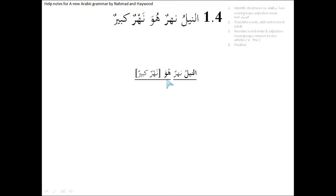هُوَ is a pronoun, and all pronouns are definite. So we have a shift from the definite to the indefinite نَهْرٌ. We know it's indefinite because it has a double تَنْوِين. So نَهْرٌ — that's the مُبْتَدَ for the second sentence. And what comes after is the مُبْتَدَ for the first sentence, with the خَبْر following it.